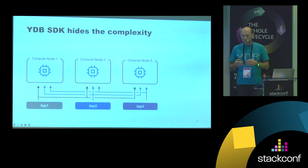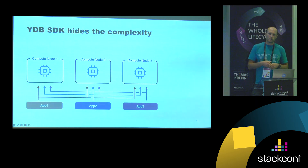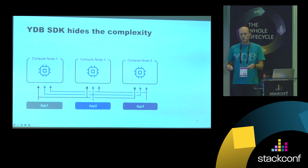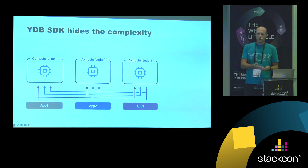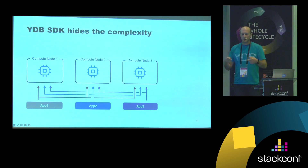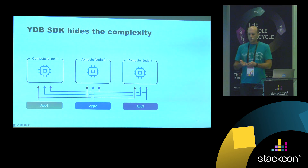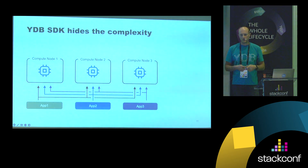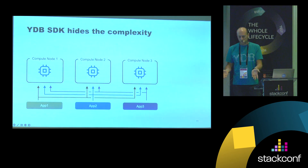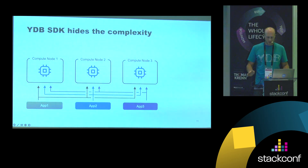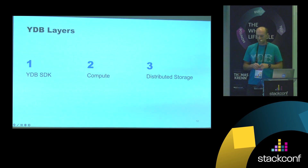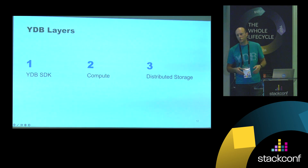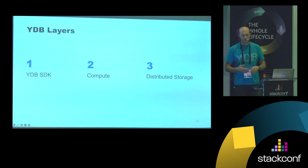Why does the application layer have something to do with YDB? Because we provide an SDK for most popular programming languages that hides the complexity of dealing with a distributed system. You can add new compute nodes to your database — the SDK will handle this modification and connect to the new nodes. Different errors might occur when sending a query to a distributed system; a node might fail and you have to retry the request. In order to get this burden off the developer, we have retriers and client discovery in the SDK. So we have three layers: storage layer responsible for redundancy, compute layer responsible for query execution, and SDK responsible for communicating with the distributed cluster.